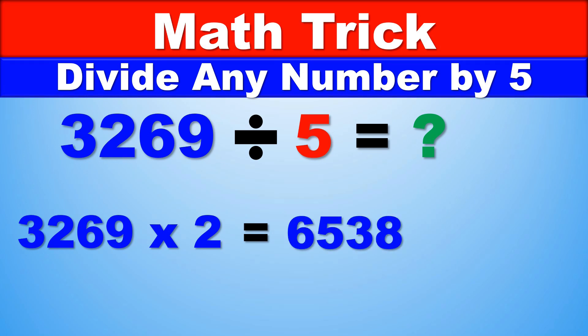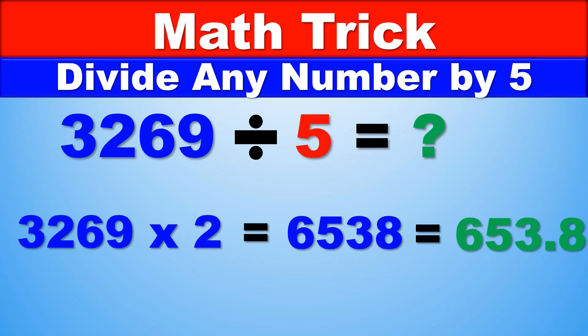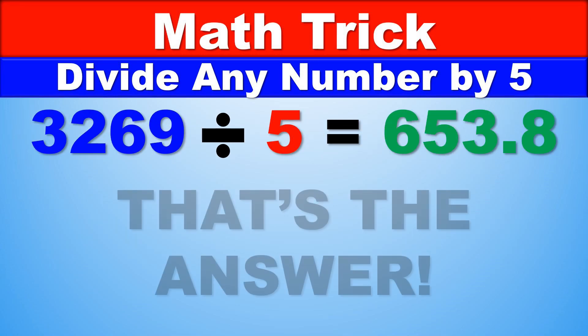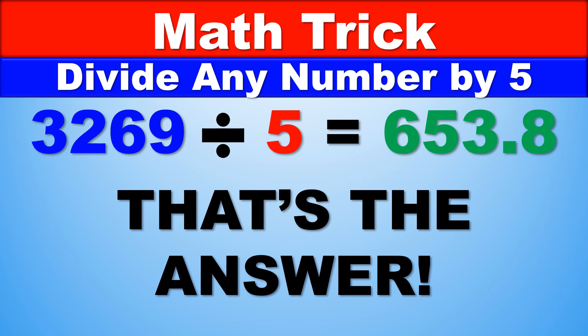And 6538 divided by 10 — just move the decimal place one back — and that becomes 653.8. And so, 3269 divided by 5 is equal to 653.8. And that is the answer.